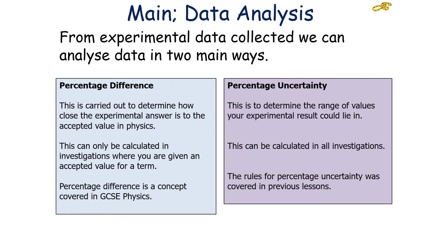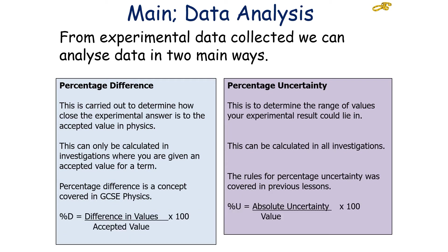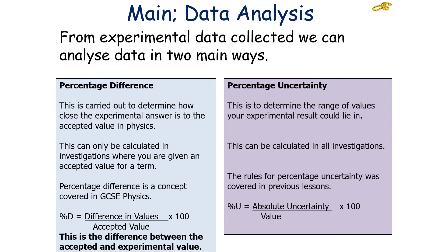The equation to calculate percentage difference is the difference in the values divided by the accepted value, times by 100. To work out the percentage uncertainty, it's the absolute uncertainty divided by the value, times by 100. So percentage difference is working out the difference between the accepted value and the experimental value, divided by the accepted value, times by 100.